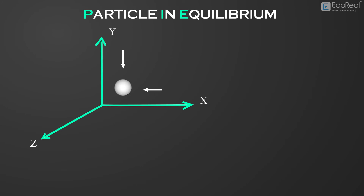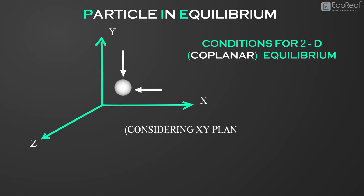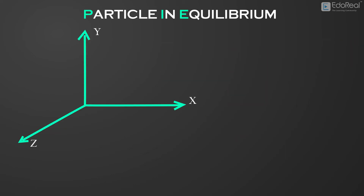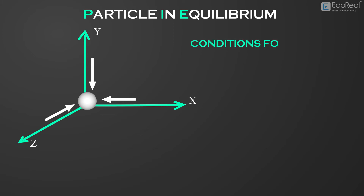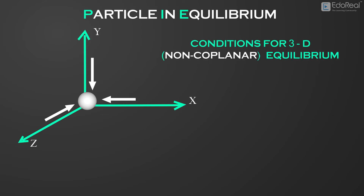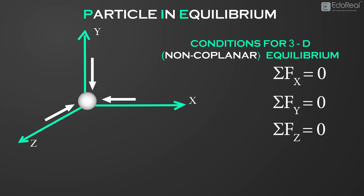If the forces acting on a particle that is in equilibrium are in the same plane, the conditions for 2D equilibrium are given as σfx equals zero and σfy equals zero. If the forces are not in the same plane, the conditions for 3D equilibrium are given as σfx equals zero, σfy equals zero, and σfz equals zero.